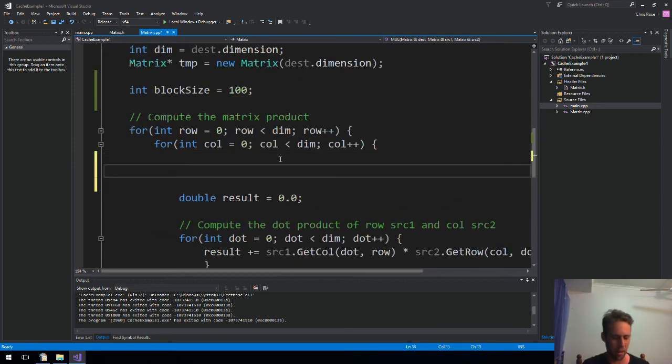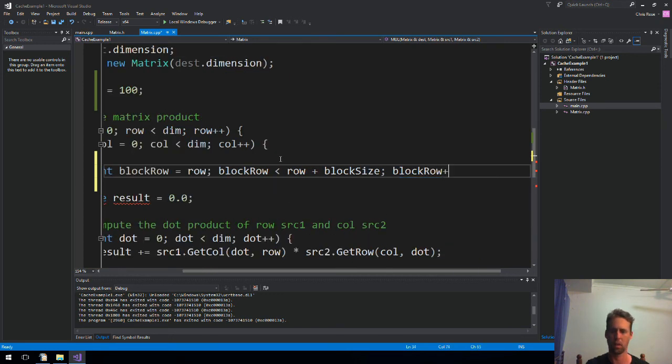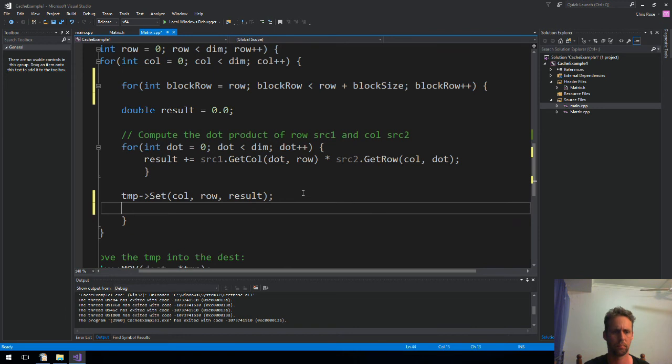For int, again, like a row block, block row or row block. I might say block row. It's going to equal row, while block row is less than row plus block size. Block row plus plus. Okay, let's just... Nice one. I'm always fighting with Visual Studio. Every new version that comes out, I'm fighting with it, trying to get it to do the tabbing and everything that I like. But I think this is working right now. So nobody touch it. Don't touch it. Don't touch it.